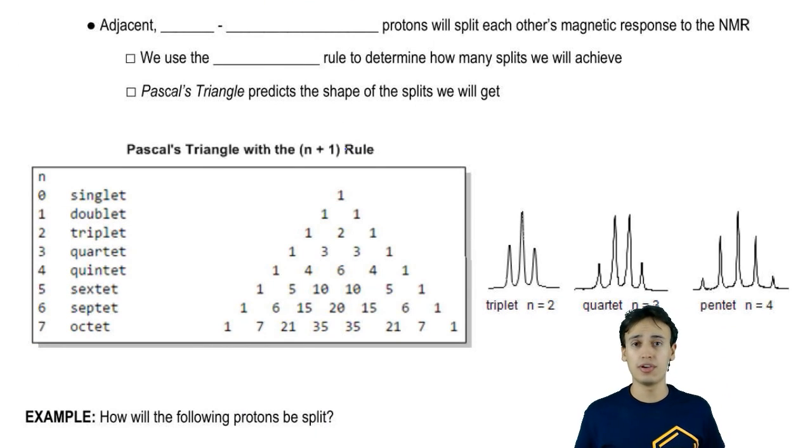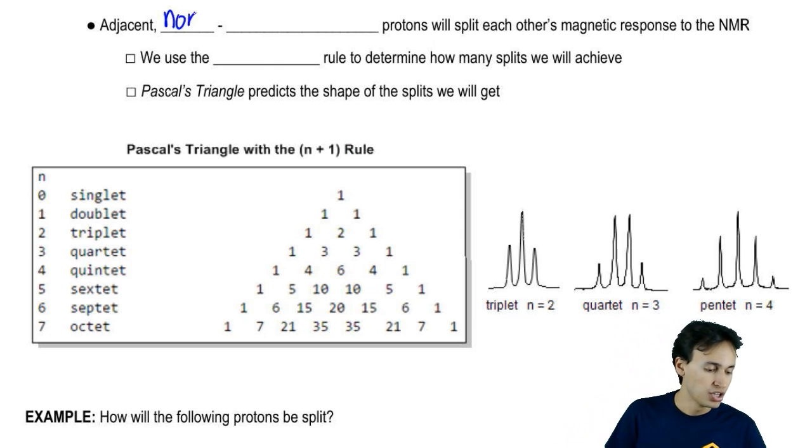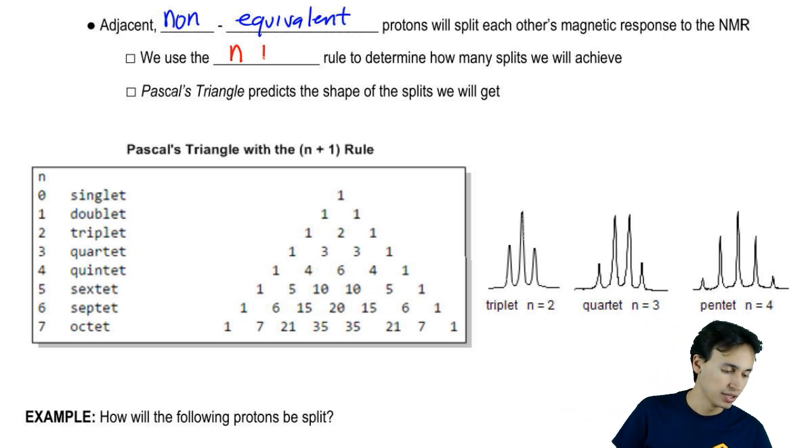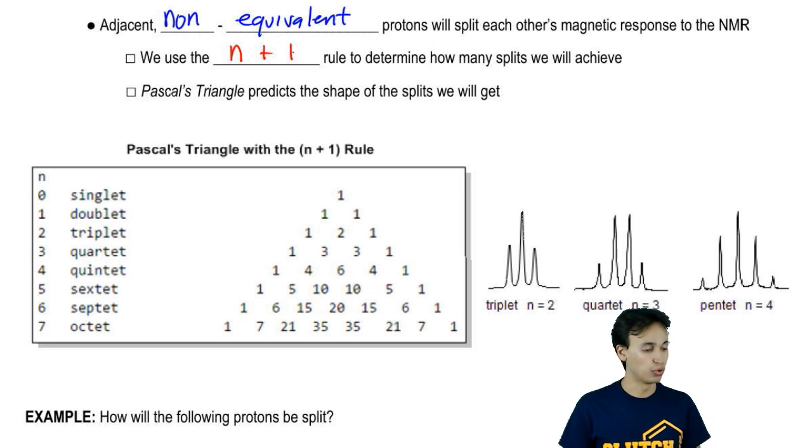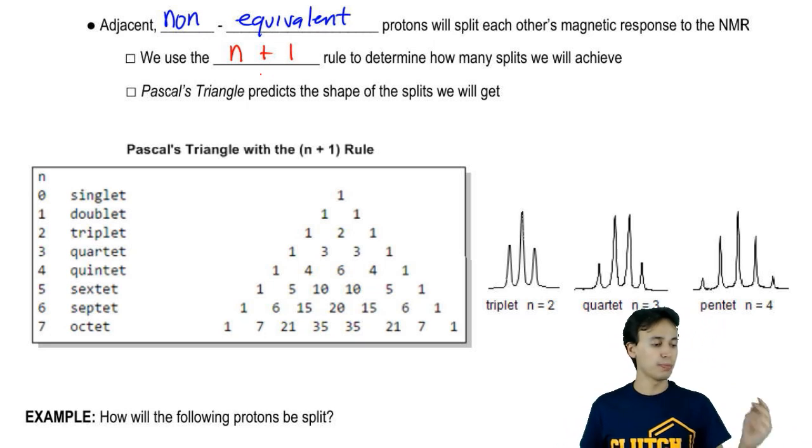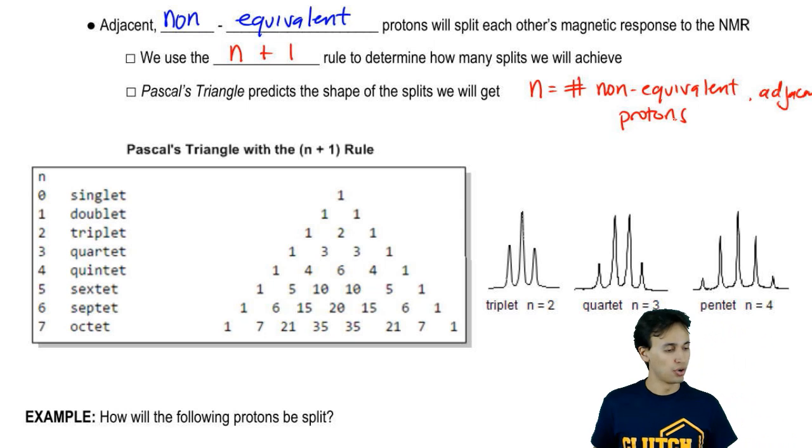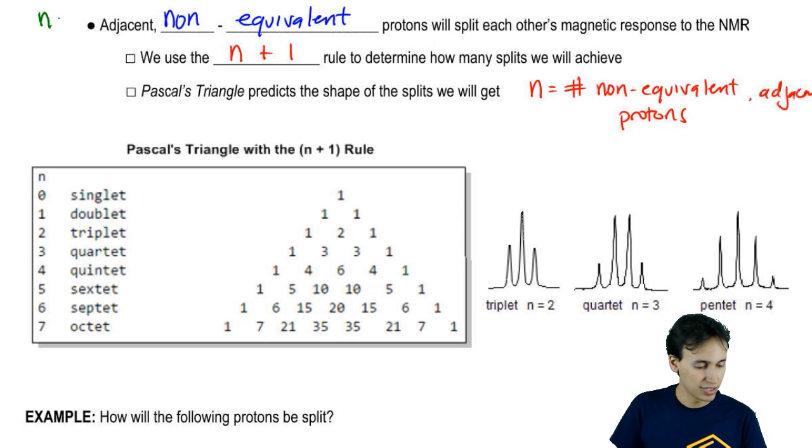Basically, if you're not learning J values, then this is a very simple rule. All it says is that adjacent non-equivalent protons will split each other's magnetic response to NMR. Now there's a really simple rule that we use to predict what these splits would look like, and that's what we call the N plus 1 rule. N stands for the number of equivalent adjacent protons.